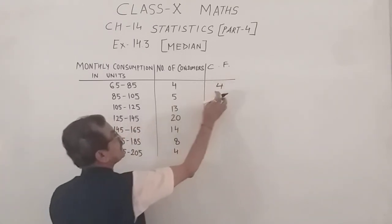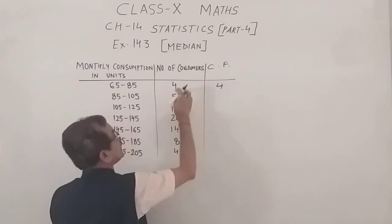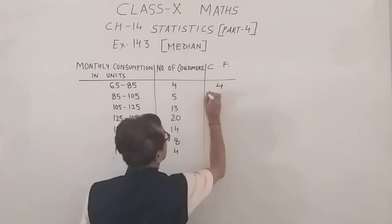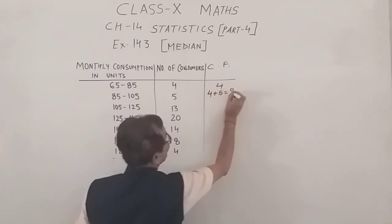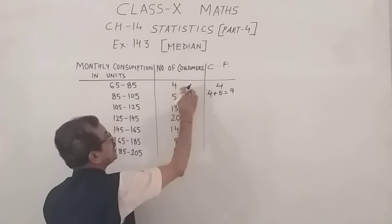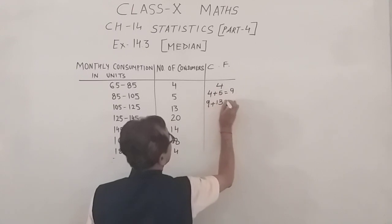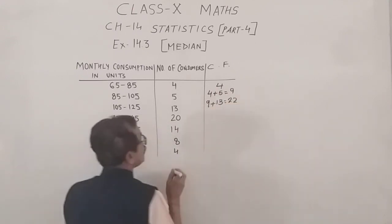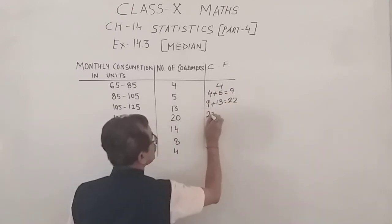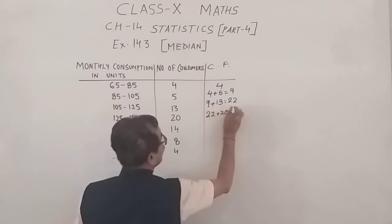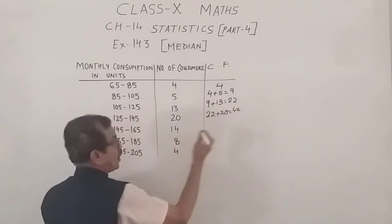And in the next, we will have this plus this. That is, both these classes, both these frequencies. That gives you 9. Furthermore, we will be adding all 3 frequencies to get 9 plus 13 is equals to 22. Furthermore, 22 plus 20 gives us 42 and so on.